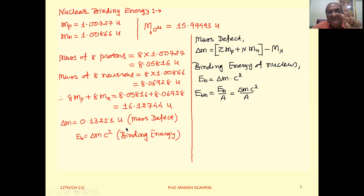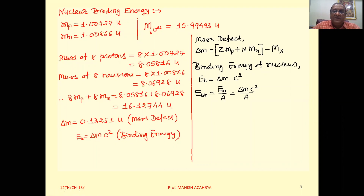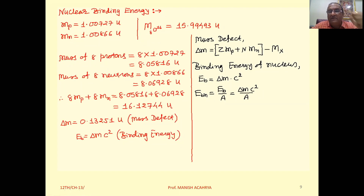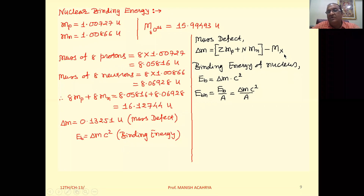So some mass is missing — that is the mass defect. That particular mass is converted into energy as per Einstein's equation E = mc². Here, this delta-m mass, which is called the mass defect, converts into energy. The mass defect delta-m equals the total mass of the protons in free state plus the total mass of the neutrons in free state, minus the mass of the element.